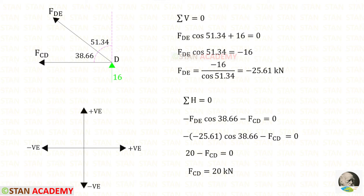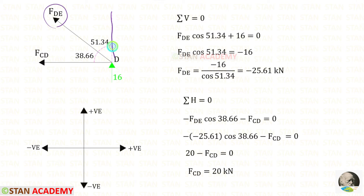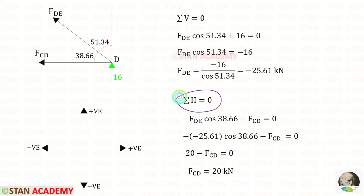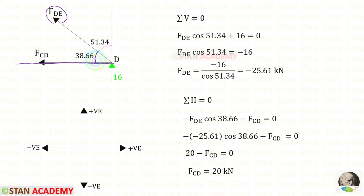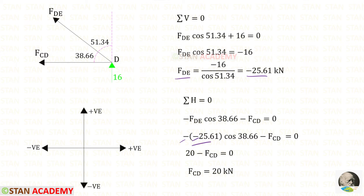At joint D, we first apply Sigma V = 0 because there will be only one unknown. VED = 16 kN is acting upwards (positive). FDE is inclined; to resolve it vertically we need 51.34°, so we multiply FDE by cos 51.34. It is acting upwards, so positive. For FDE we get minus 25.61 kN. Applying Sigma H = 0, FCD is acting towards the left (negative). FDE resolved horizontally uses cos 38.66. For FCD we get 20 kN.